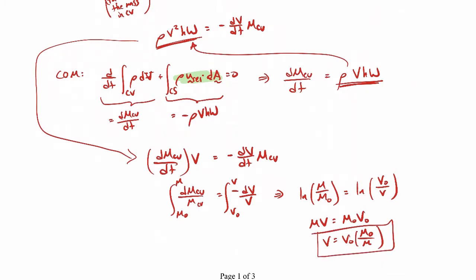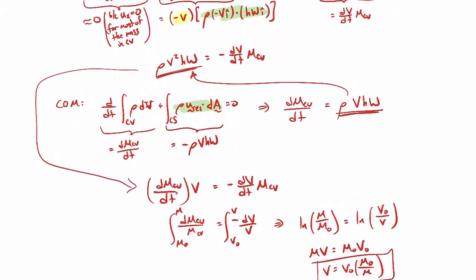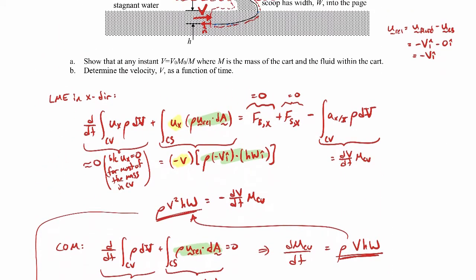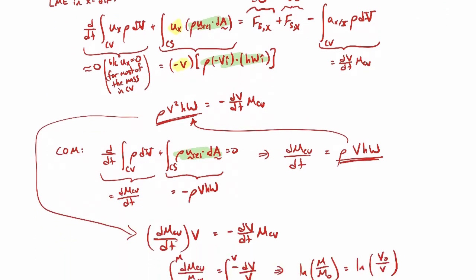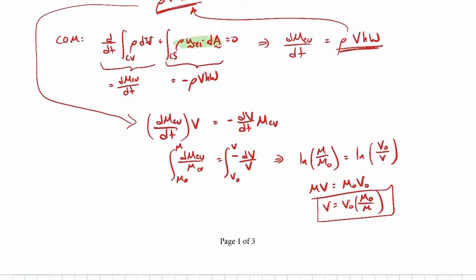That expression — v equals v₀ m₀ over m — is what we were asked to find at the very beginning. That's how we get to that point.